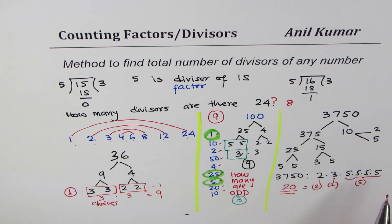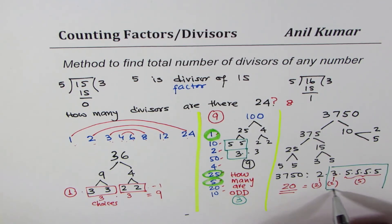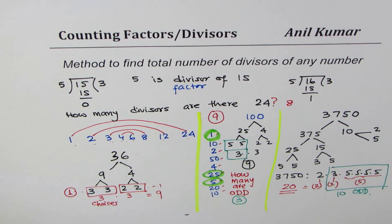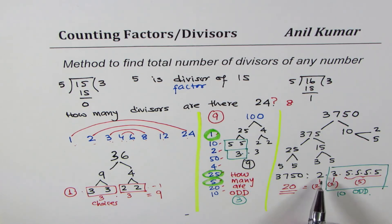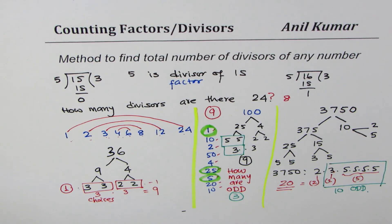How many of these 20 divisors are odd? For odd divisors we exclude the factor of 2, leaving only 3¹ and 5⁴, which gives 2×5 = 10 odd divisors. That means 10 are even as well — exactly half — because multiplying each odd divisor by 2 makes it even. This formula is very handy for finding the number of factors or divisors of any number. Feel free to post your comments and share your views. Thank you and all the best!